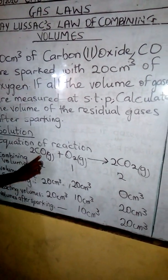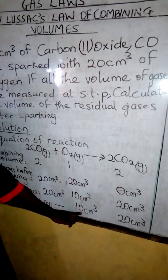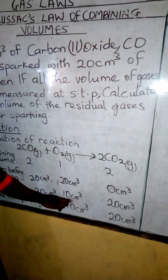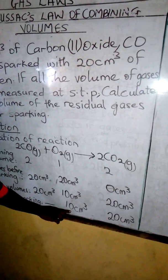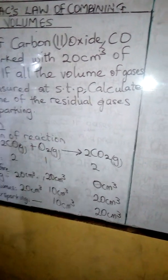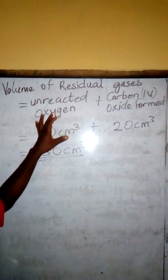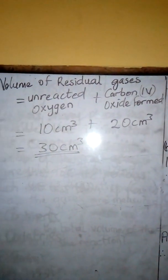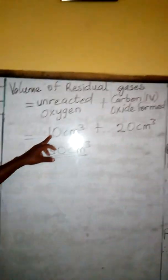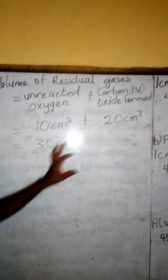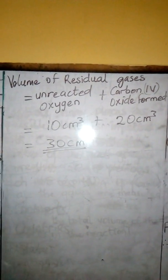Volumes after sparking: all the CO is used up, with 10 cm³ of oxygen remaining unreacted — only 10 cm³ of O₂ was used during the reaction, so the remaining 10 cm³ is left over. The product formed is 20 cm³ of CO₂. To calculate the volume of residual gases, we add unreacted oxygen plus CO₂ formed: 10 cm³ + 20 cm³ = 30 cm³, which is the volume of the residual gases.